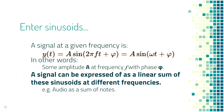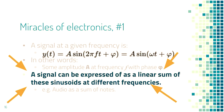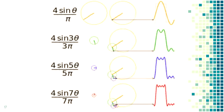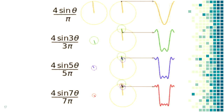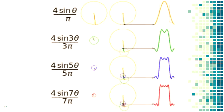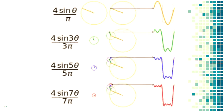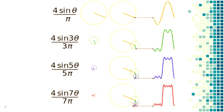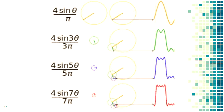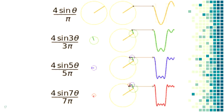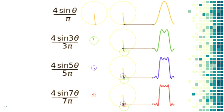If you walk away with nothing else from this talk: any signal in the time domain can be expressed as a linear sum of sine waves. If I take any arbitrary shape, I can give you an equivalent set of sine waves that add together to produce that shape. This is fundamental to understanding radio. Here's an example: a square wave is actually made of sine waves. If I start with a low-frequency sine wave and keep adding more, what I end up with is a square wave.